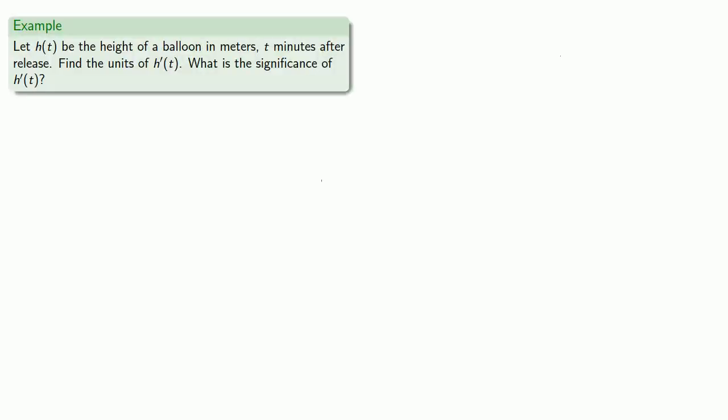For example, let h of t be the height of a balloon in meters t minutes after release. Let's find the units of h prime of t and determine the significance of h prime of t. So first the units of h prime of t will be the units of h over the units of t. And that will be meters over minutes. And this is a rate of change of height with respect to time.